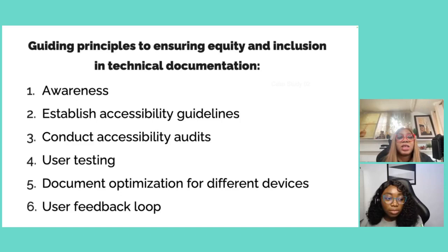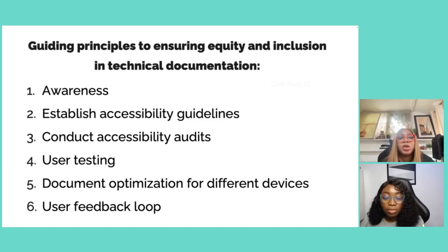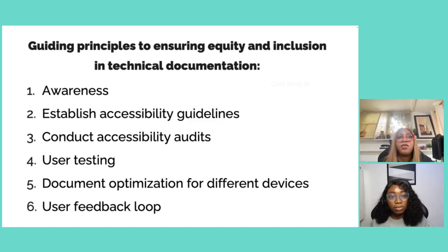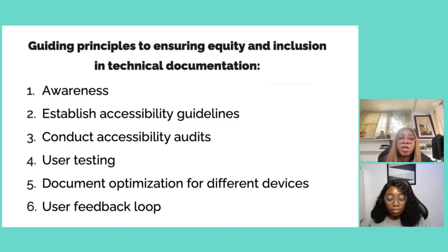Some people have an idea, but when it comes to implementing documentation, do people understand what audiences with disabilities need in terms of accessing your documentation? The first step is awareness — ensuring that everyone in the community, contributors and maintainers alike, are aware of the goal of accessible documentation. Then, establish clear guidelines that community members can follow. After that, conduct regular accessibility audits to ensure documentation follows the guidelines set out.